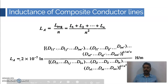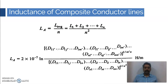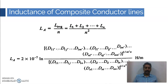It is a natural logarithm. L₁ is 2 × 10⁻⁷ natural log, and we have two terms — one in the numerator and one in the denominator. We are going to give specific names for these numerators and denominators. If you see the geometrical configuration of these conductors and look at these terms, considering the numerator, it is the m′nth root of the product of all possible combinations of distances from the strands in conductor B to the strands in conductor A.